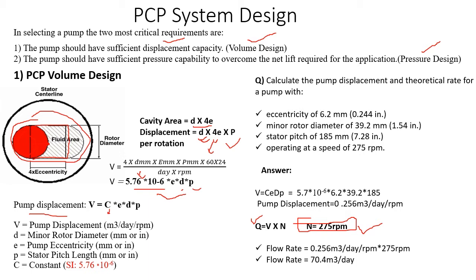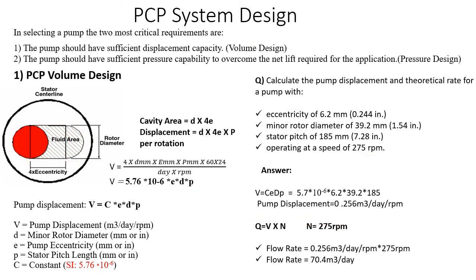To calculate pump displacement and theoretical rate, consider a pump with given eccentricity, minor rotor diameter, and pitch length — where pitch length is the cavity length as seen in previous slides — and a given operational speed. Using the pump displacement formula, V equals C times e times d times p, giving us the flow rate in SI units. Multiplying the rotational speed by this pump displacement gives the actual theoretical flow rate.